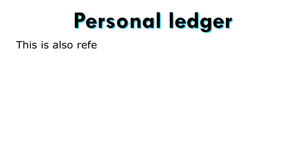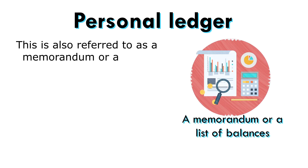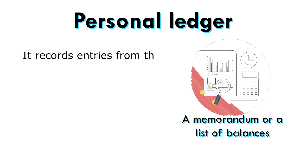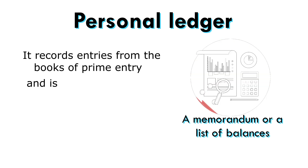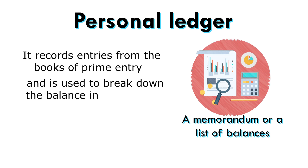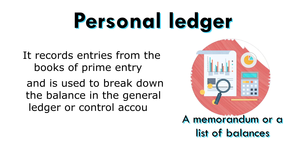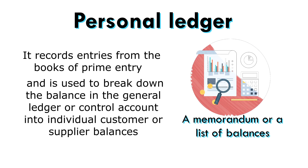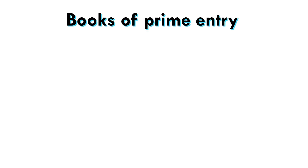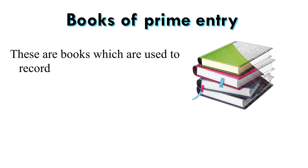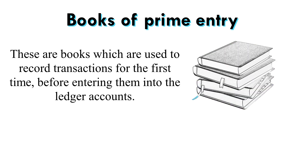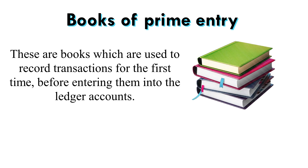Personal Ledger: This is also referred to as a memorandum or a list of balances. It records entries from the books of Prime Entry and is used to break down the balance in the general ledger or control account into individual customer or supplier balances. Books of Prime Entry are books used to record transactions for the first time before entering them into the ledger accounts.